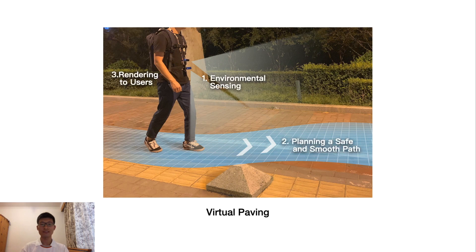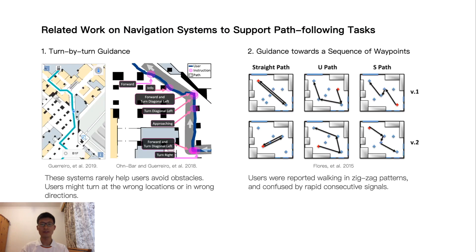This work focuses on designing a user-friendly feedback solution to render Virtual Paving. The key task is to guide users along a continuous path smoothly and efficiently, which is in essence a path-following task. To support this task, prior works mainly explored how to provide turn-by-turn navigation or how to guide users towards a sequence of waypoints. However, few existing systems were validated to support users following a continuous path smoothly and efficiently.